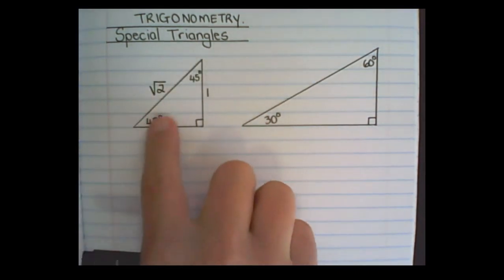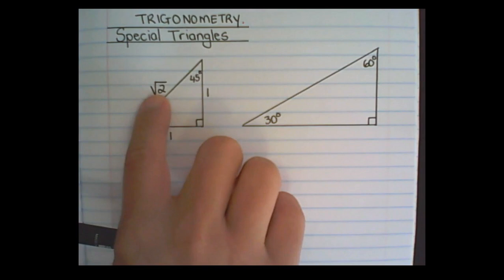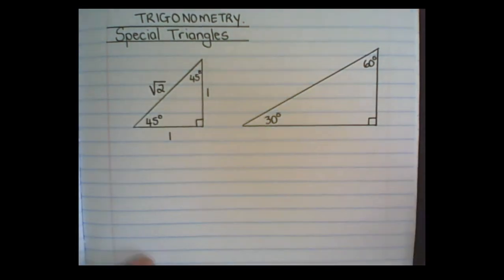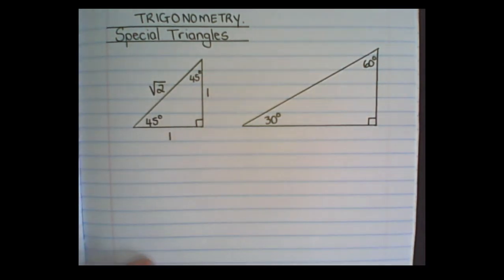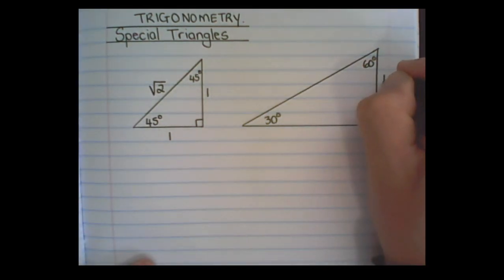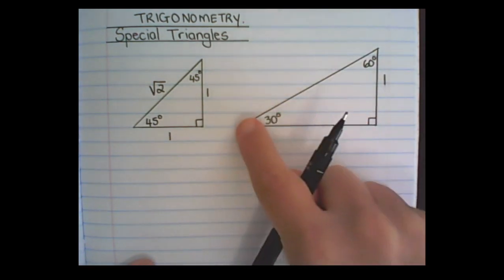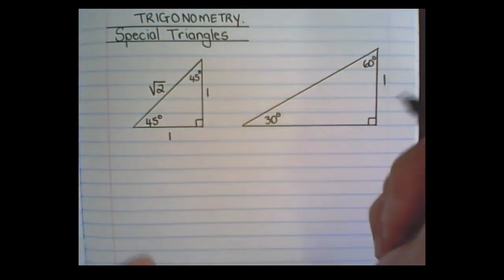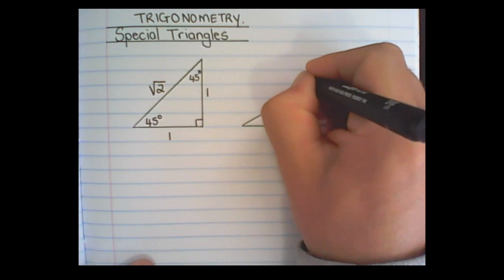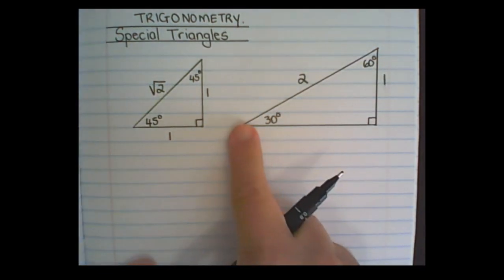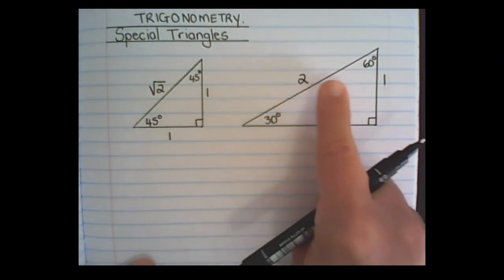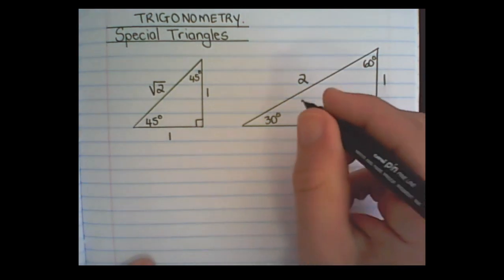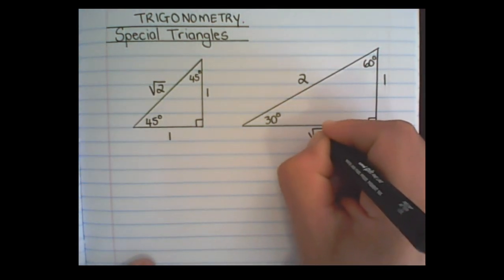For now you do not have to calculate that, but it is determined by Pythagoras. Our second triangle is 30 degrees, 60 degrees and 90. Notice both triangles are right-angled triangles. If I assume this side is one unit, the length of the other line would be half of that line, so that would be two units. To find the third side I use Pythagoras: two squared is four, minus one, that becomes three, and I square root that, so it's the square root of three.